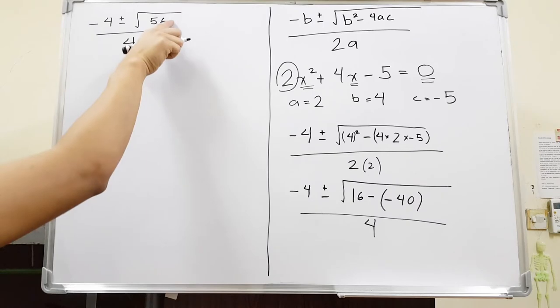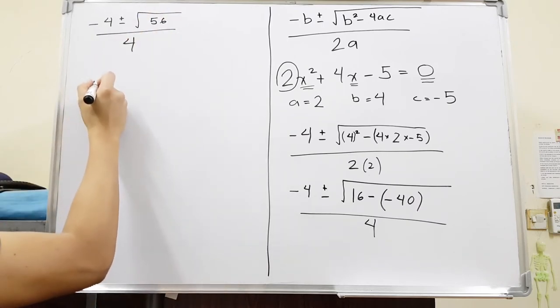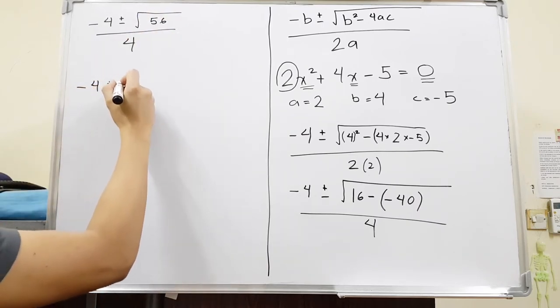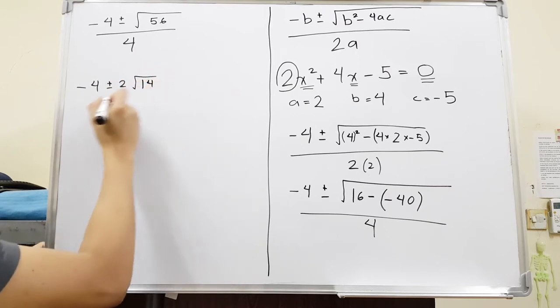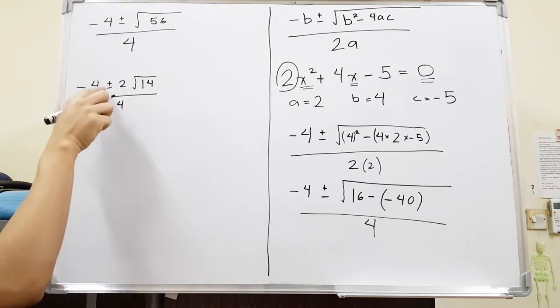So we can simplify this further. We can write it as negative 4 plus and minus 2 root 14 all over 4.